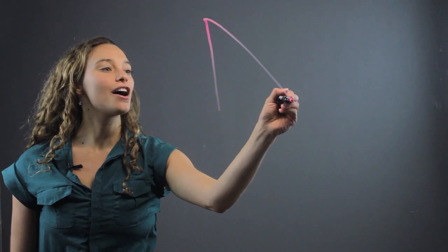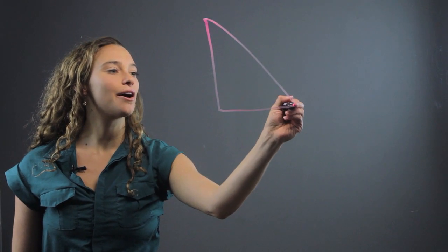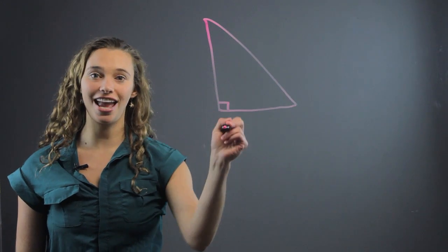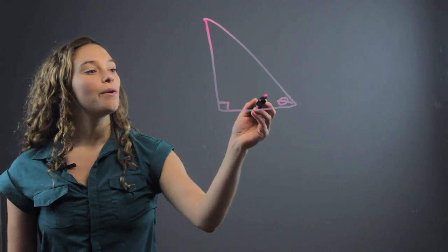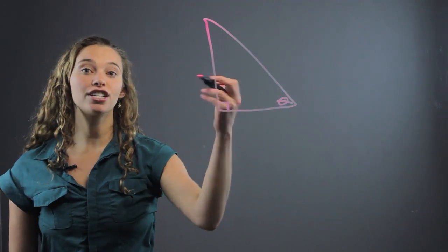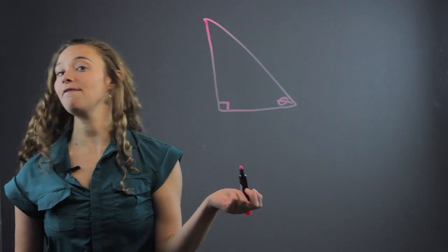So let's say we have a right triangle like so. This is our 90 degree angle and we want to find the measure of this angle theta. Well, there's a few different trigonometry functions that we should become familiar with.